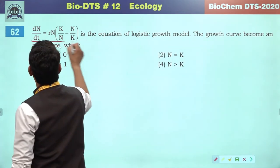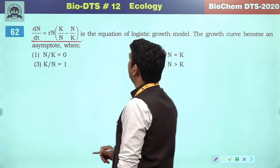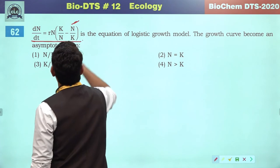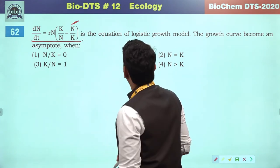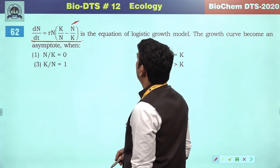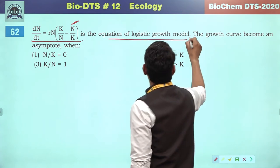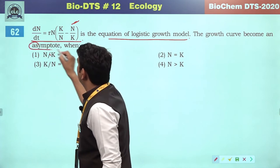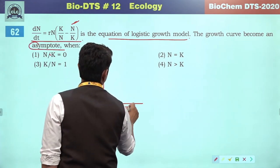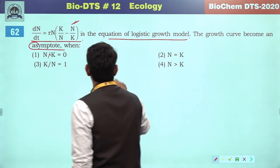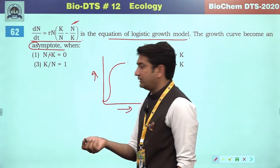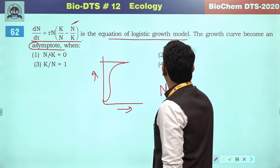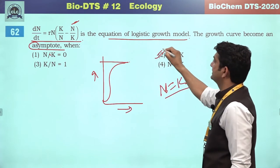The equation dN/dt = rN(K−N)/K — where K−N/K is replaced by K/N − N/K — is the equation for logistic growth. The model curve becomes sigmoidal. This happens when the environment's carrying capacity is approached, and N and K become equal. So the correct reference will be the second option.